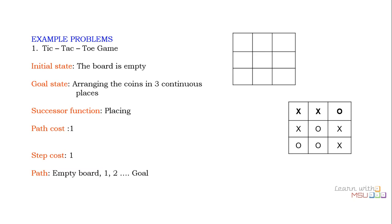Another problem is the tic-tac-toe game. The initial state is a completely empty board. The goal state is arranging coins in three continuous places — either player 1 or player 2 wins — but the game may also end in a draw, which is also a goal state. The successor function is placing a coin on an empty square. Path cost and step cost are not critical here, so we consider them as 1. The path goes from an empty board, placing coins one by one, until the board is filled or a winner is determined.